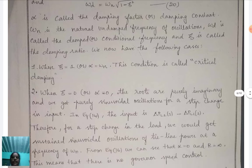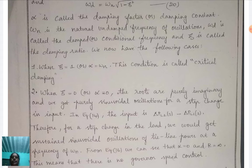We now consider the following cases. The first case is when ζ = 1, or damping factor α = ω_N — this condition is called critical damping. Regarding the tie-line: the tie-line is used to interchange power from one area to another area, and we need to find the oscillation behavior under critical damping, under-damping, and over-damping conditions.